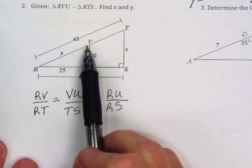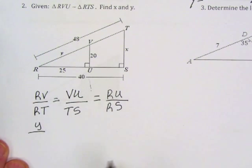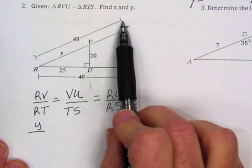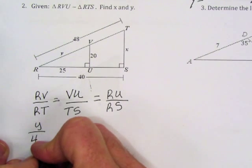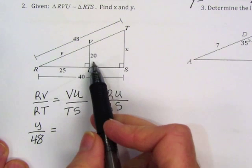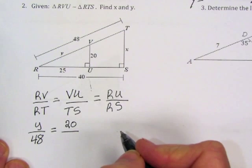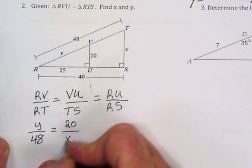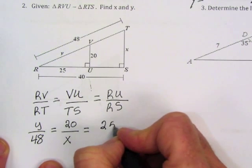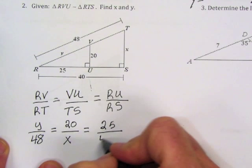So I am going to look at RV, and RV has the variable y on it, and that is what we are asked to solve for. RT is this entire segment here, which is 48. VU has a 20 on it. TS has an x on it. RU has a 25, and RS is this entire segment here, has a 40.